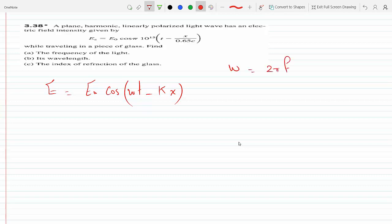So it's 2πf times t minus, and we know that the propagation number k is equal to 2π over lambda. So this is minus 2π over lambda times x.